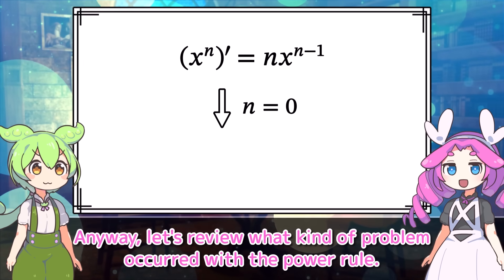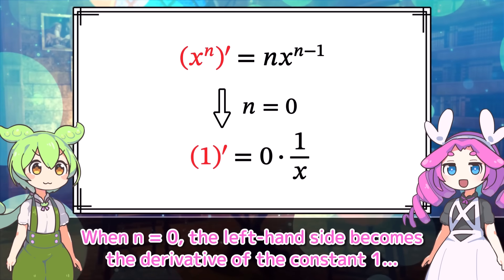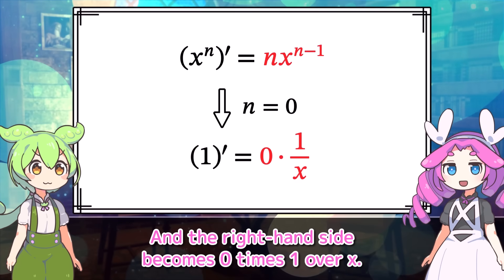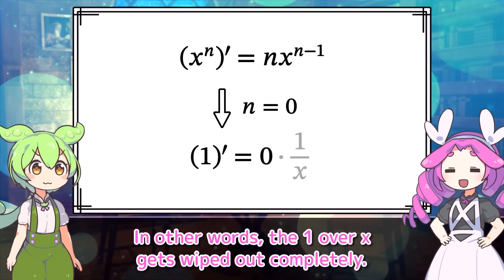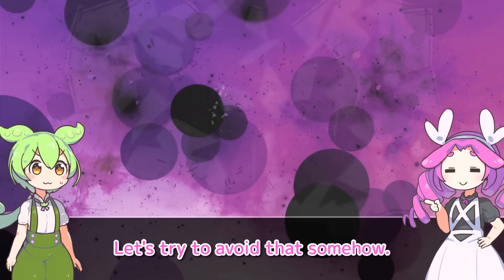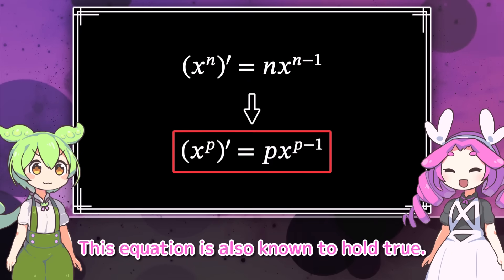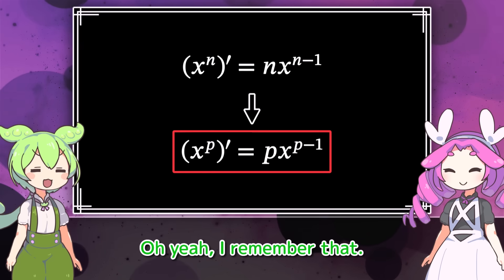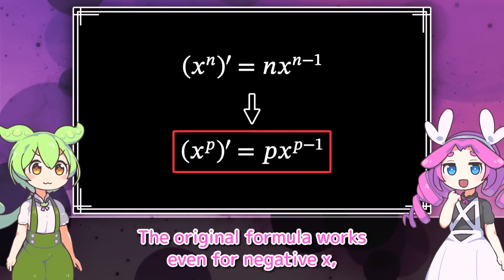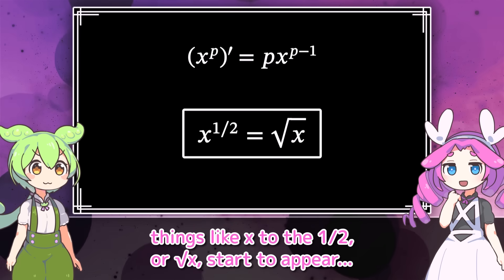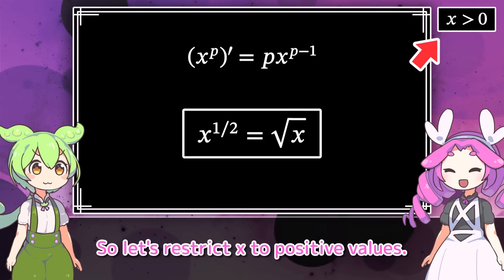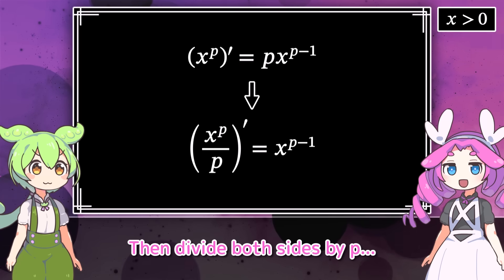What in the world is going on? Where did this natural log come from? That's a tough question. Anyway, let's review what kind of problem occurred with the power rule. When n equals 0, the left-hand side becomes the derivative of the constant 1. And the right-hand side becomes 0 times 1 over x. In other words, the 1 over x gets wiped out completely. Let's try to avoid that somehow. So, as a first step, let's extend the integer n to a real number p. This equation is also known to hold true. Oh yeah, I remember that. The original formula works even for negative x, but when we handle real exponents, things like x to the 1 half, or the square root of x, start to appear. So let's restrict x to positive values.